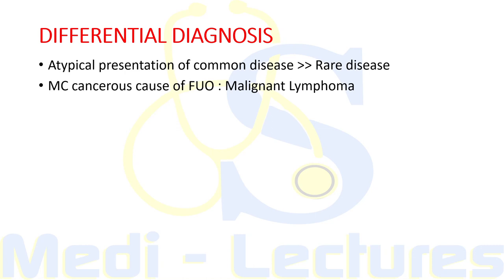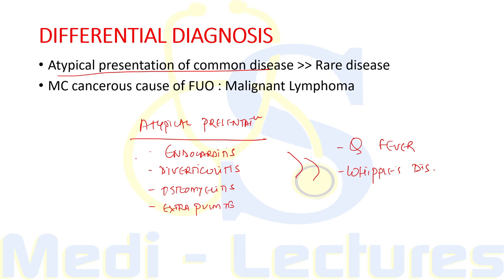The differential diagnosis for PUO is very extensive, but one key point always to keep in mind is that PUO is far more often caused by an atypical presentation of a common disease rather than a very rare disease. For example, atypical presentations of endocarditis, diverticulitis, osteomyelitis, and extrapulmonary TB are more common diagnoses. Rare diseases like Q fever and Whipple's disease should still always be kept in mind since their presenting symptoms can be non-specific.